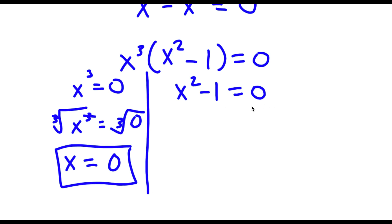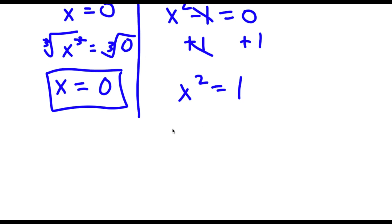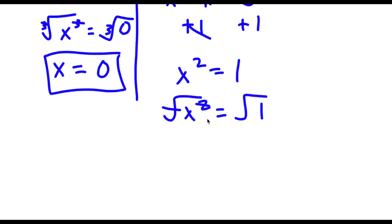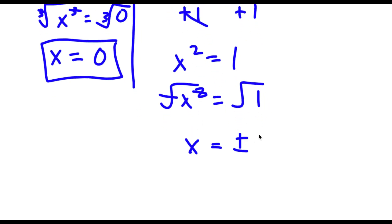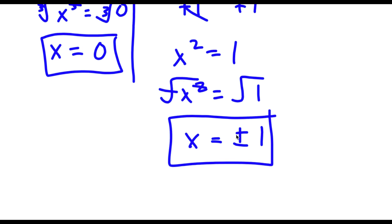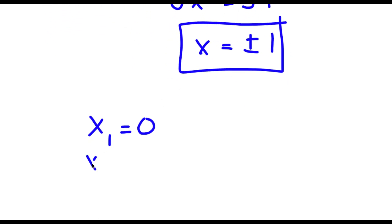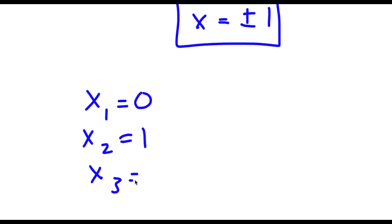Now I have x squared minus 1 equals 0. So I'm going to add 1 on both sides. These two are going to cancel out and I'll be left with x squared is equal to 1. Now if I take the square root on both sides, these cancel out and I'll be left with x is equal to positive or negative 1. So our three solutions to this problem are 0, 1, and negative 1.